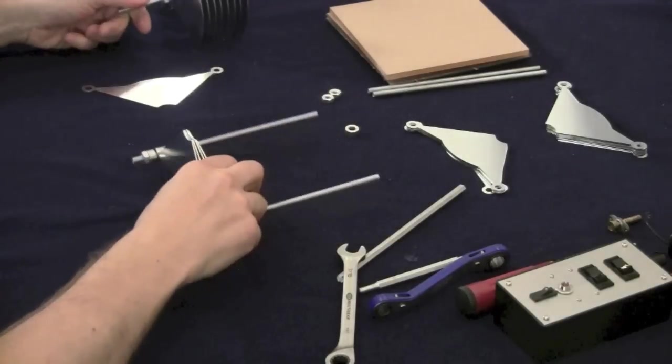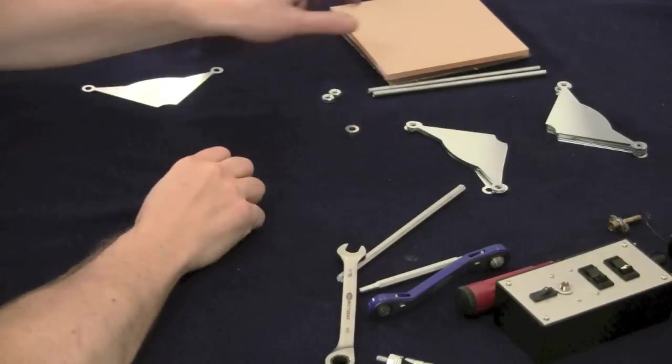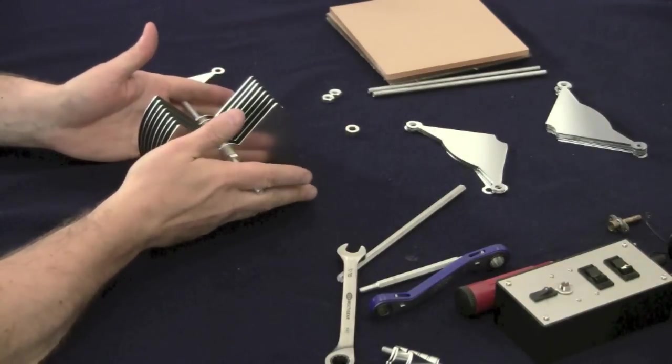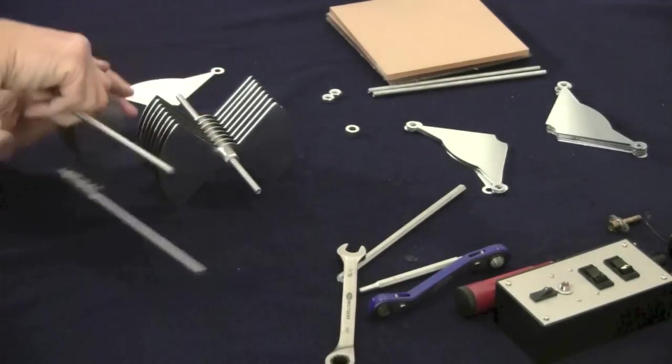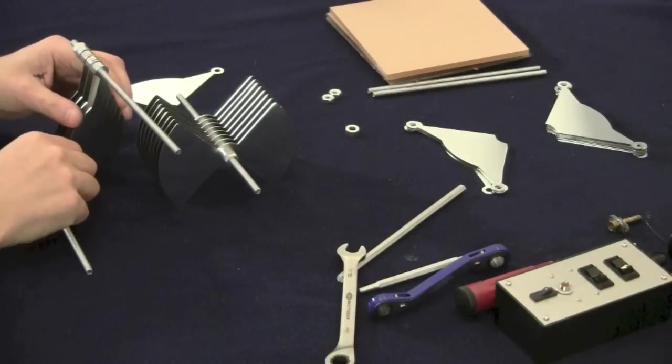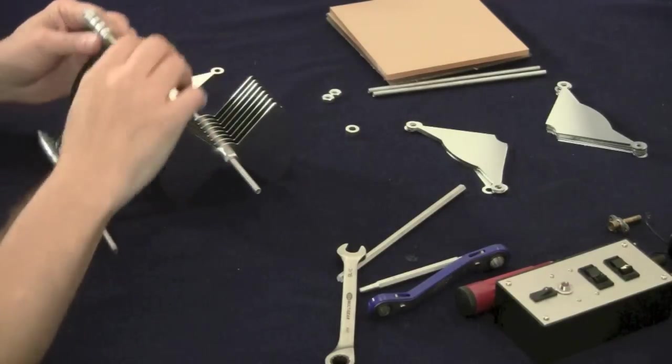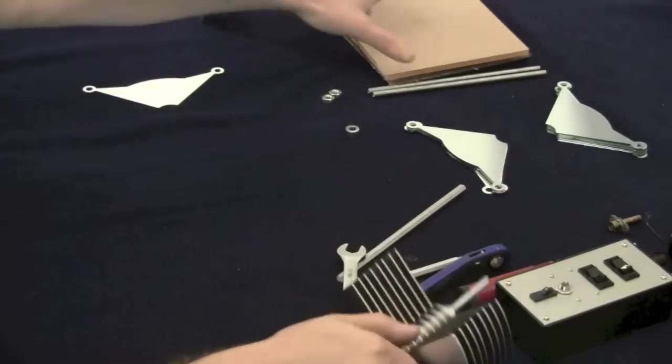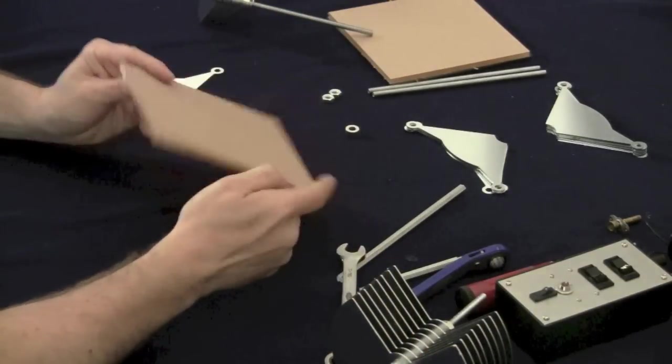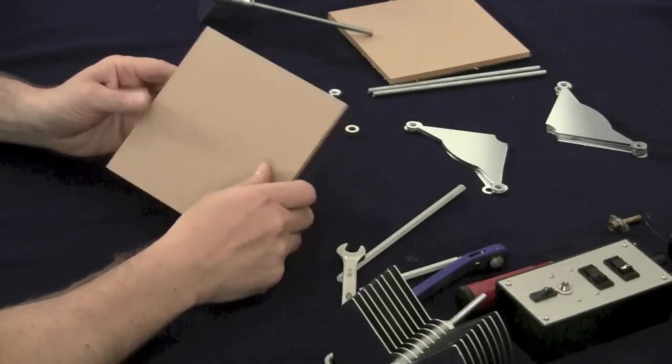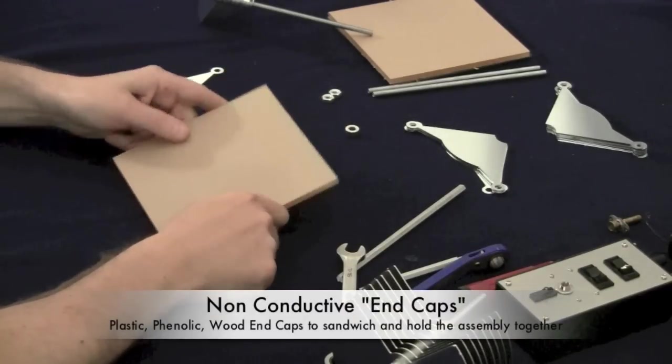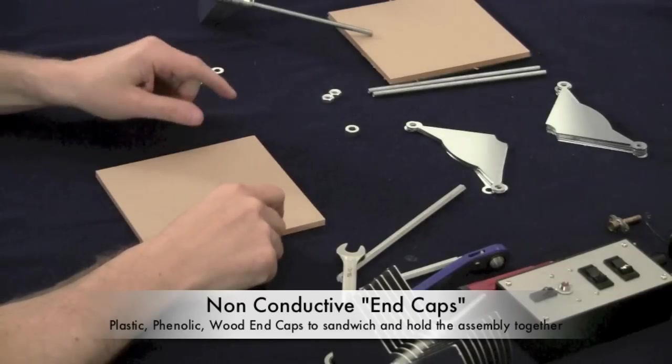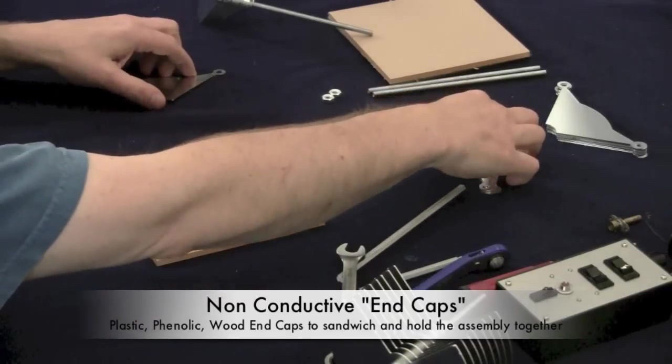Okay so next, the next challenge if you want to call it that would be what we call the end caps. We need something to mount this and the stators to, of course there's going to be another set of stators on the opposing side. So what we can use is I like to use things like plexiglass. Here's a piece of plexiglass that has just some protective paper still on it.